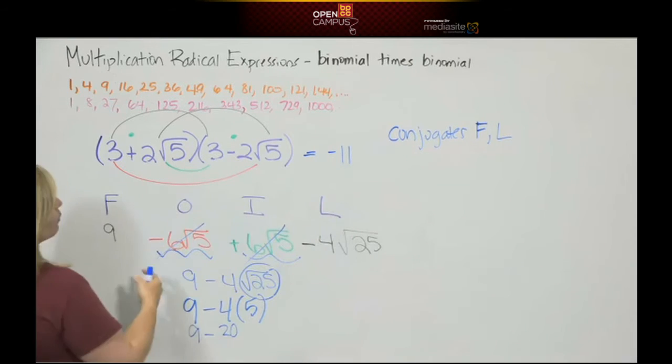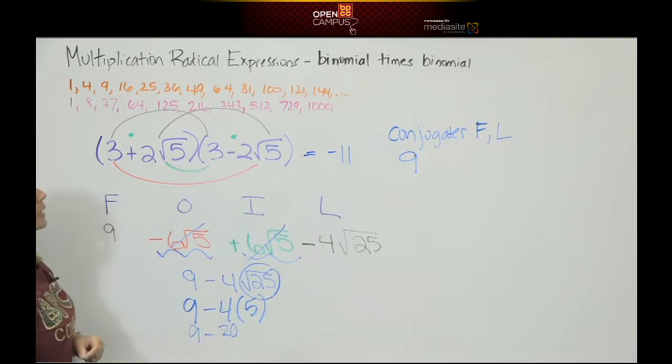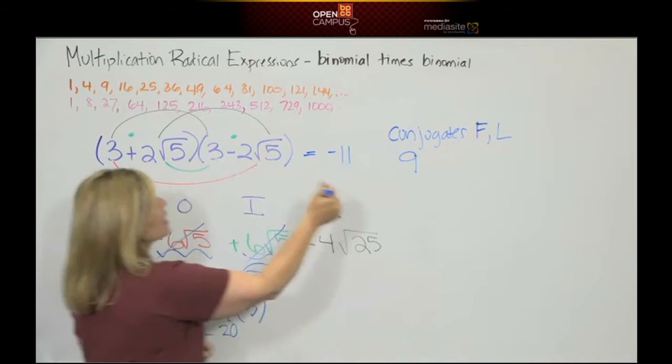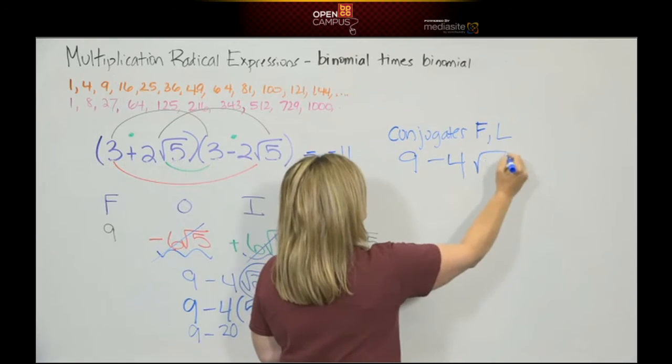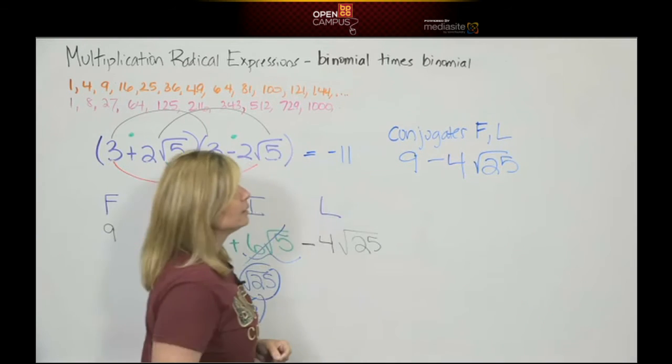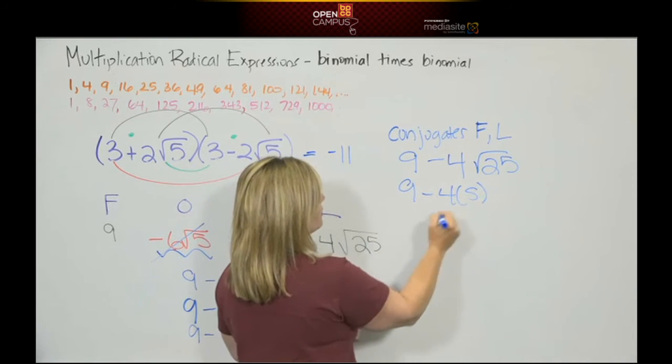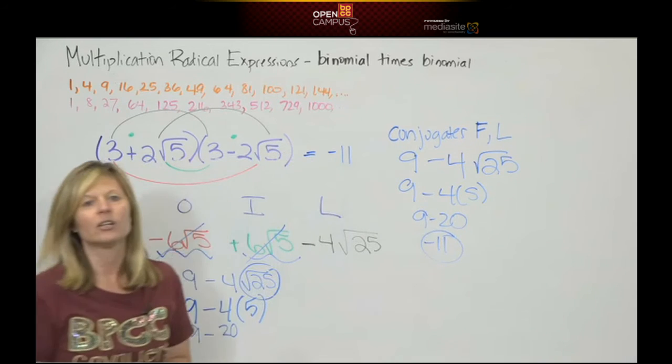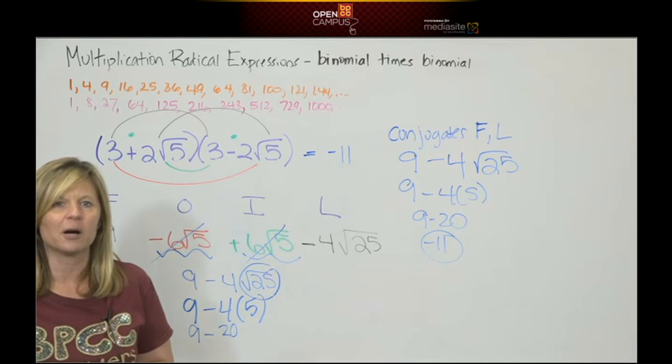So you could have looked here and said, oh, first term, 3 times 3 is 9. Last term, positive 2 square roots of 5 times negative 2 square roots of 5. Positive 2 times negative 2 is negative 4. Square root of 5 times square root of 5 is square root of 25. And that would have got you to 9 minus 4 times 5, 9 minus 20, negative 11. So don't forget that cute little shortcut. Okay. Still got more multiplying to come.